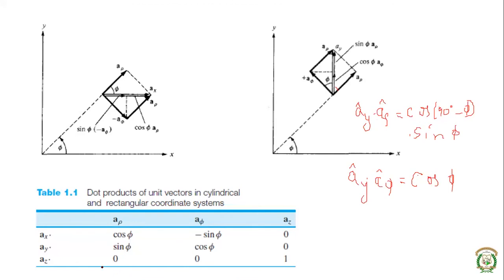These results can be summarized in a table: ax·a_rho = cos(phi), ax·a_phi = −sin(phi); ay·a_rho = sin(phi), ay·a_phi = cos(phi); and az·az = 1 while all other cross-system dot products with az are zero. This table allows us to convert any vector from rectangular to cylindrical coordinates.